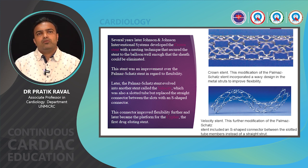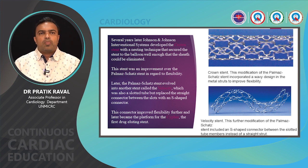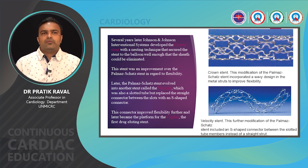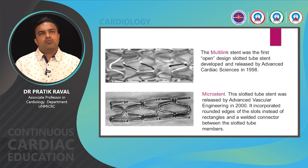Subsequently, the Palmaz-Schatz stent evolved into a velocity stent in which the straight connectors were replaced with S-shaped sigmoid connectors. These S-shaped connectors further improved the flexibility and deliverability of the stent. The velocity stent subsequently became the platform for the Cypher stent, which was the first drug eluting stent. The open cell design was then introduced into BMS to improve side branch access and further improve flexibility and deliverability.